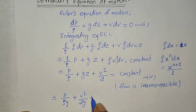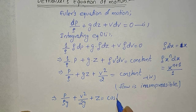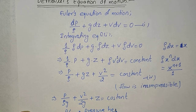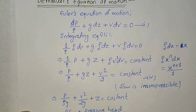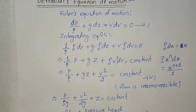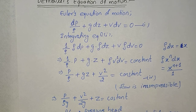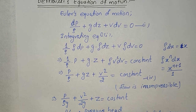Here P/(ρg) is our pressure head, V²/(2g) is our velocity head, and Z is equal to potential energy per unit weight. This is the Bernoulli's equation expressed in terms of heads.